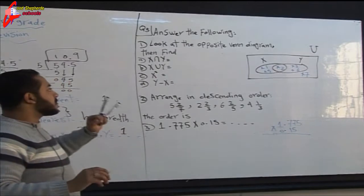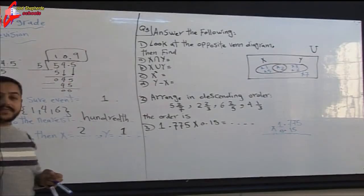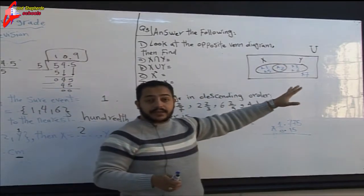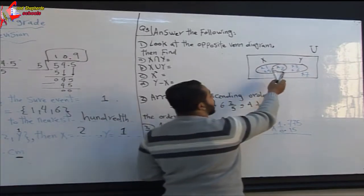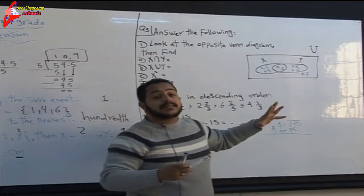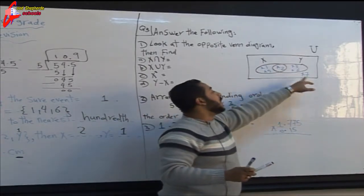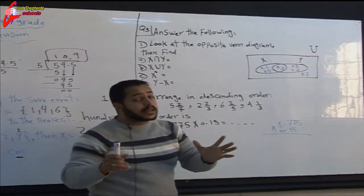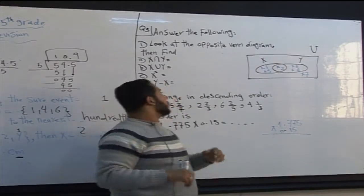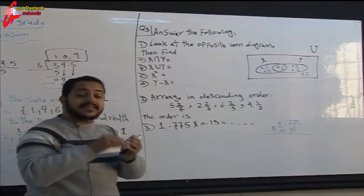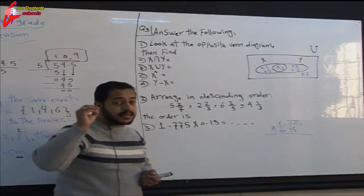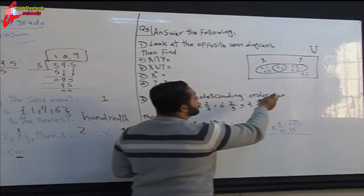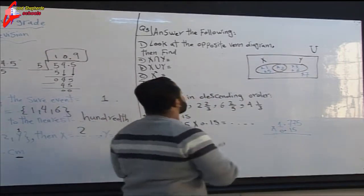Question three: look at the Venn diagram. We have a universal set containing two sets, X and Y. Inside X we have 1, 2, and 5. Inside Y we have 3, 2, and 6. The element 7 belongs to the universal set but not to X or Y. Find X intersect Y — we want the common elements between X and Y. The common element is 2, so X intersect Y equals {2}.